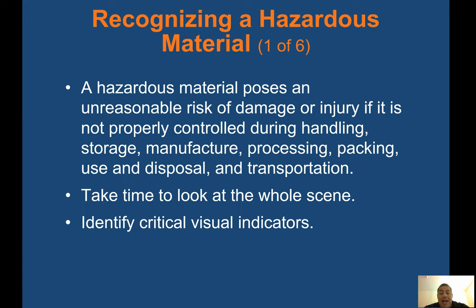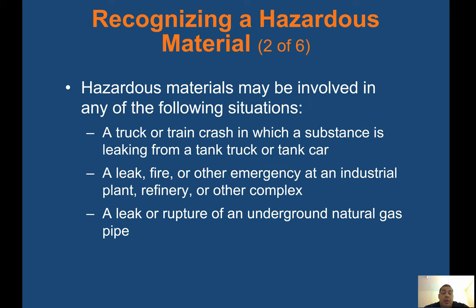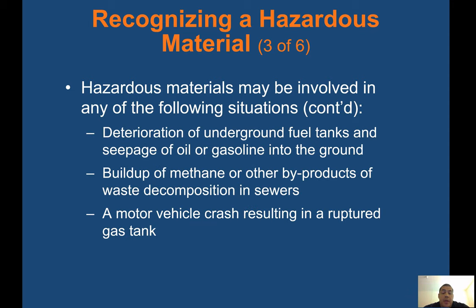Identify critical visual indicators. HAZMAT may be involved in situations including: a truck or train crash with a substance leaking from a tank truck or tank car; a leak, fire, or other emergency at an industrial plant, refinery, or other complex; a leak or rupture of an underground natural gas pipe; deterioration of underground fuel tanks and seepage of oil or gasoline; buildup of methane or other byproducts of waste decomposition in sewers; or a motor vehicle crash resulting in a ruptured gas tank.